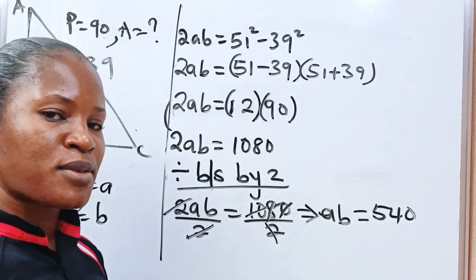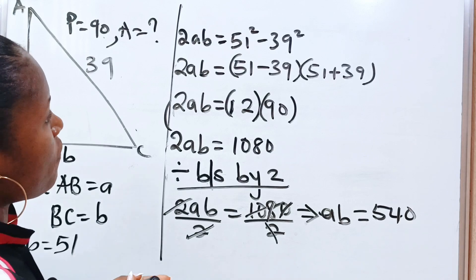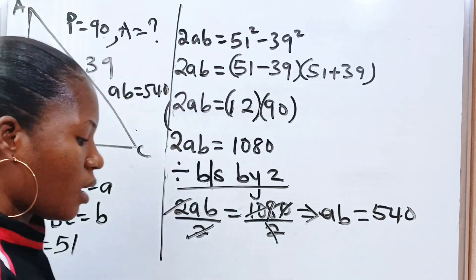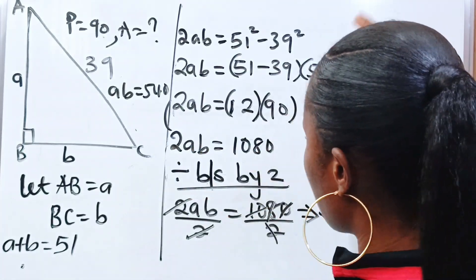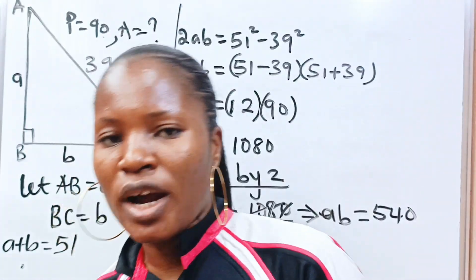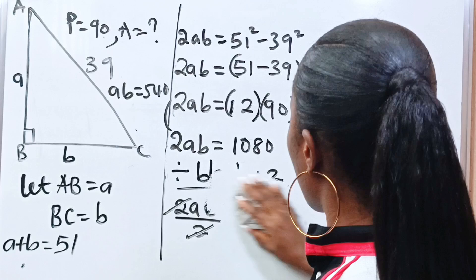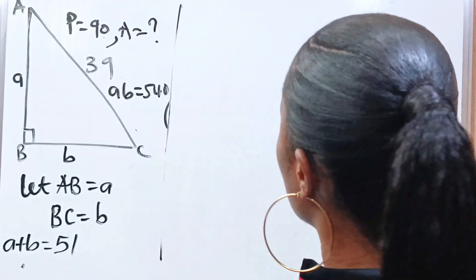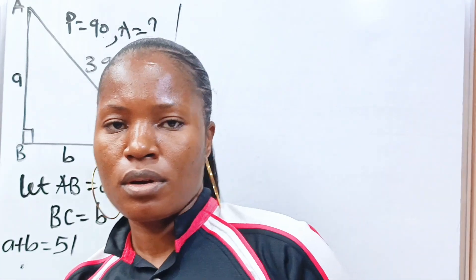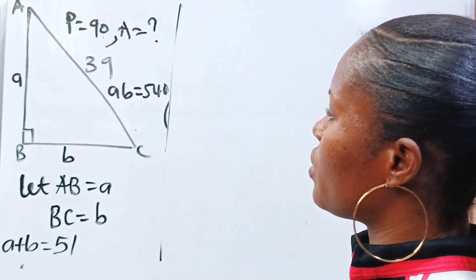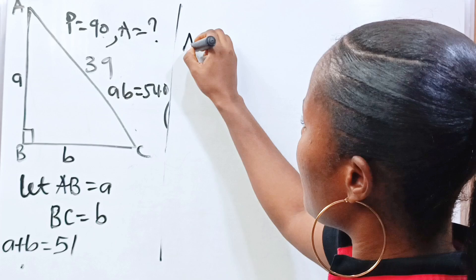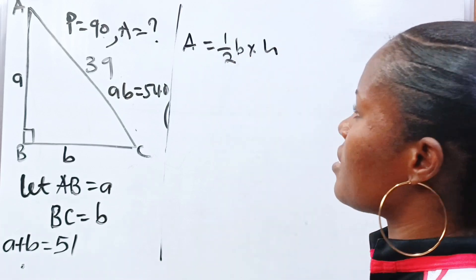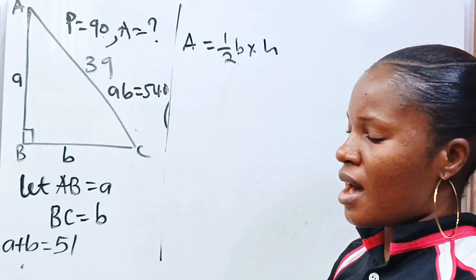Now, let us go back to the equation. We have that AB is 540. The equation says we should find the area, right? Now, area of a triangle, we can calculate area of a triangle using so many methods. But according to the information we have, this is what we are going to use. Remember that area is equal to half base times height.